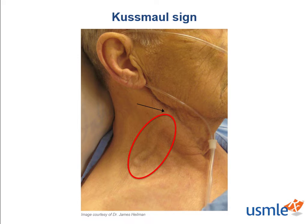Kussmaul's sign can occur in any condition that causes impaired RV filling, including constrictive pericarditis and restrictive cardiomyopathies, because the ability of the right heart myocardium to expand in response to incoming blood is limited. In addition, right atrial or ventricular tumors can present with a positive Kussmaul's sign, because there's a decreased ability of the right side of the heart to fill, causing incoming blood to back up.